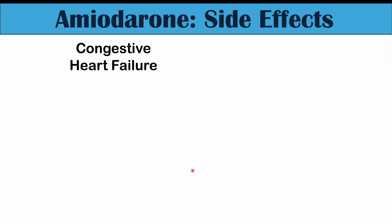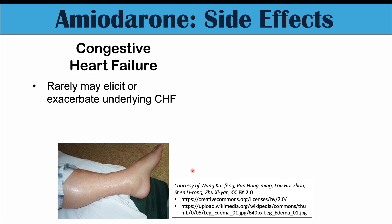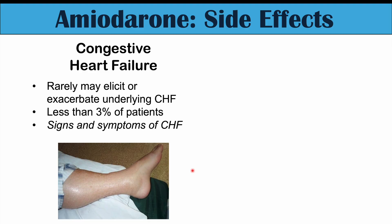We can also see congestive heart failure in a very small subset of patients on amiodarone. It may trigger or exacerbate an underlying congestive heart failure, occurring in less than 3% of patients. If it's right-sided heart failure, you can see peripheral edema, fluid in the legs, ascites, and even liver failure. If it's left-sided heart failure, we can get respiratory symptoms including dyspnea on exertion and paroxysmal nocturnal dyspnea, where patients are suddenly woken up gasping for air.